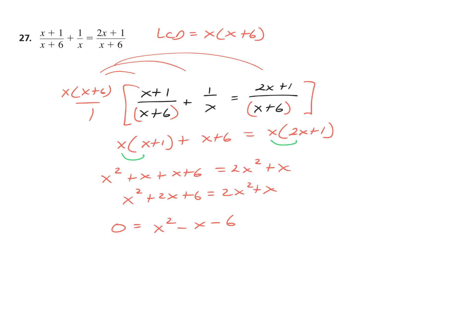It's a very common factorable quadratic form we've seen before: that gives me X minus 3 times X plus 2. My solutions will be X equals 3 and X equals negative 2. Double-check for zero denominators — nope, life is good. And a happy face.